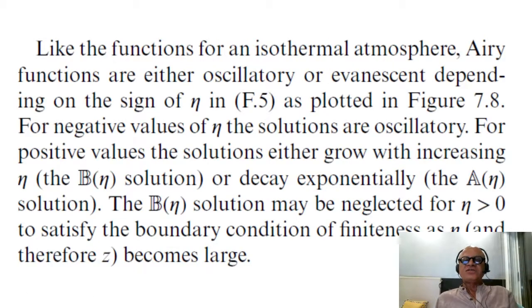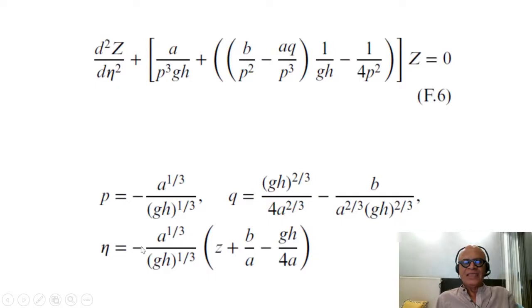Like the functions for an isothermal atmosphere that we looked at with the oscillatory solution and the constant solution, here we get Airy functions as solutions that are either oscillatory or evanescent, basically that means exponentially decaying, depending on the sign of eta in here.